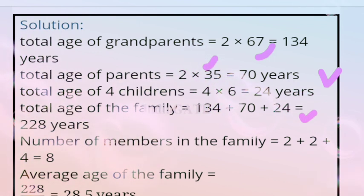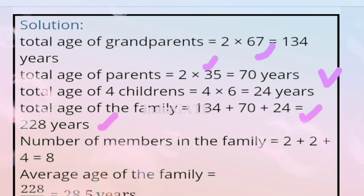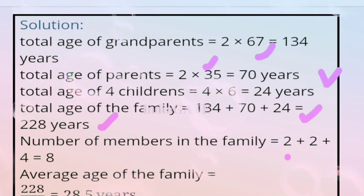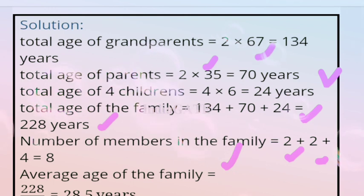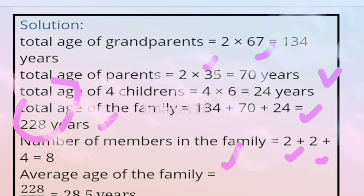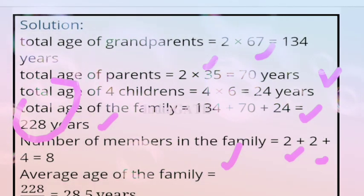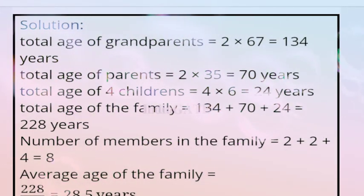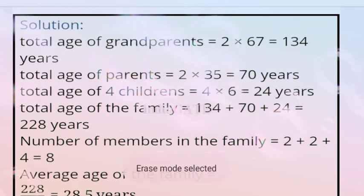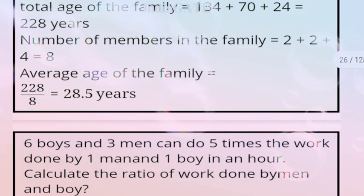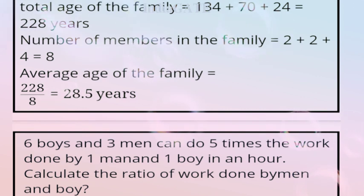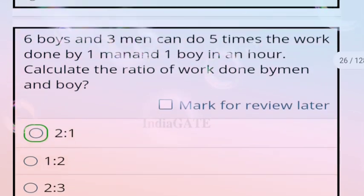Solution: total age of grandparents = 2 × 67 = 134. Total age of parents = 2 × 35 = 70. Total age of 4 grandchildren = 4 × 6 = 24. Total family age = 134 + 70 + 24 = 228. Total members = 2 + 2 + 4 = 8. Average age = 228/8 = 28.5 years.